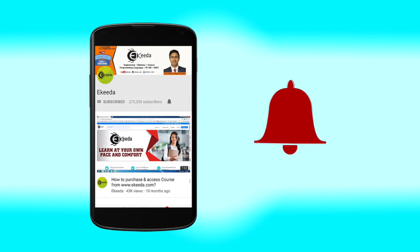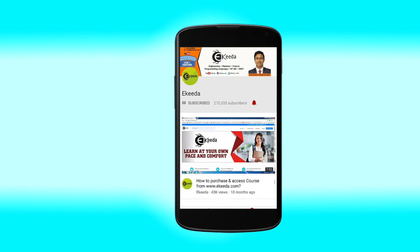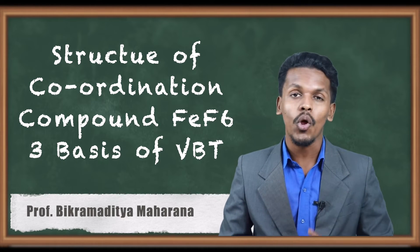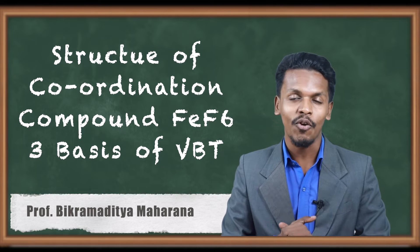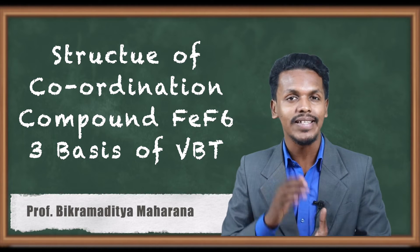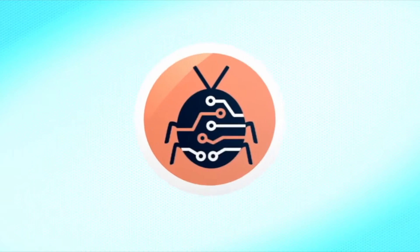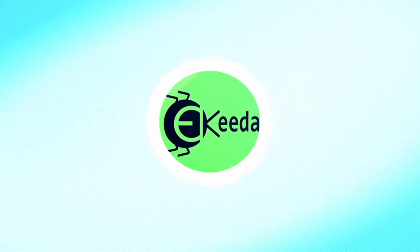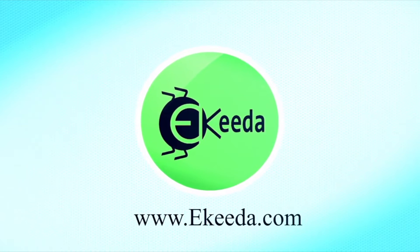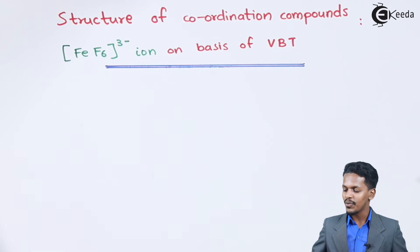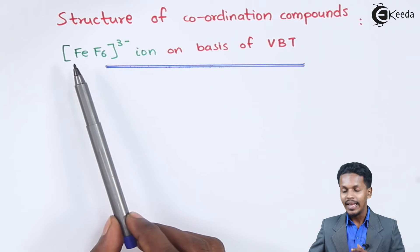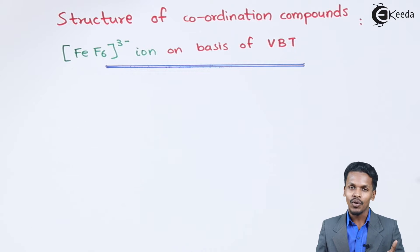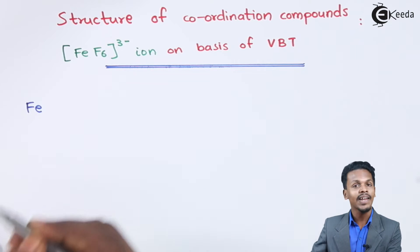Hello friends, in this topic we are going to talk about the structure of hexafluoroferrate(III) — that is [FeF₆]³⁻ with iron — on the basis of VBT (Valence Bond Theory). Let us understand this topic. We are going to talk about the electronic configuration of Fe first.